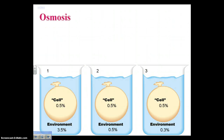Here we have more cells, and we see that these cells all have the same concentration within their beakers — each one is 0.5%. This is 0.5% sugar, which means the remaining portion out of 100% possible is 99.5% water.